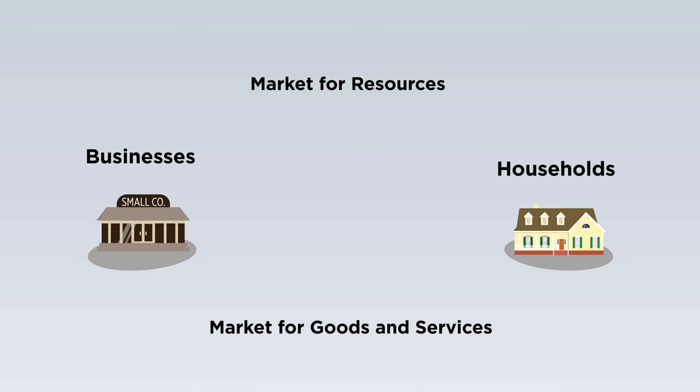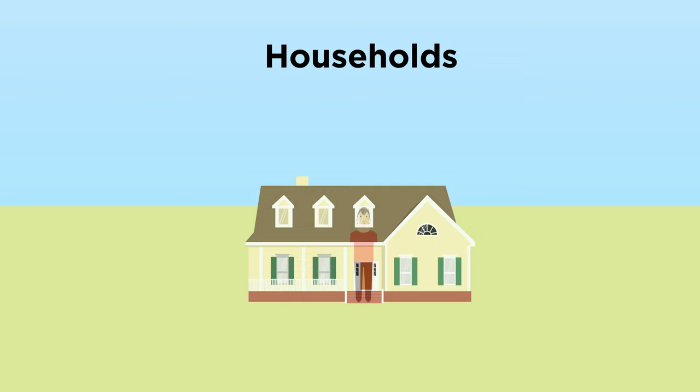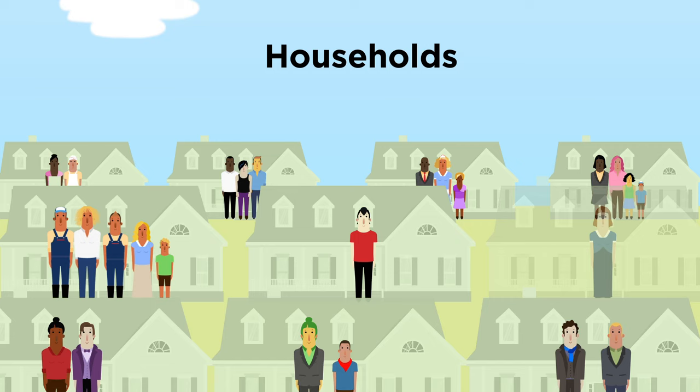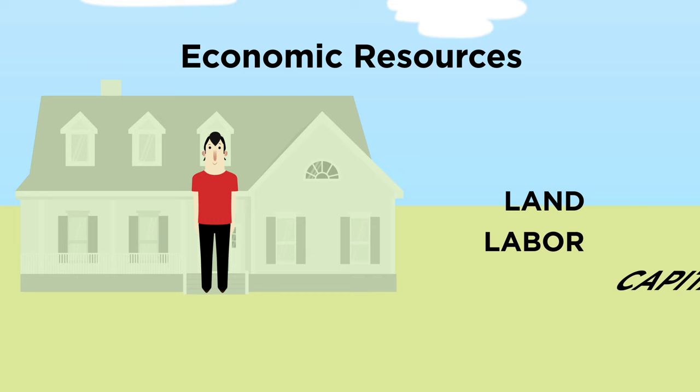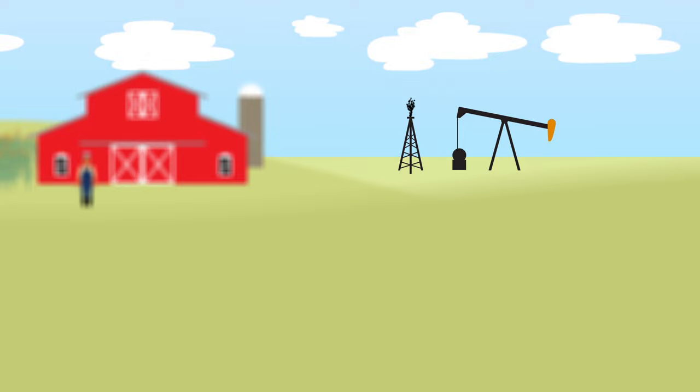Let's start with the two groups of economic decision makers. On one side of the model is households. Households consist of one or more persons who live in the same housing unit, such as a family. Households own all the economic resources in the economy: land, labor, capital, and entrepreneurial ability. Land resources are natural resources — for example, actual land owned by a farmer, or other natural resources such as oil, water, and trees.